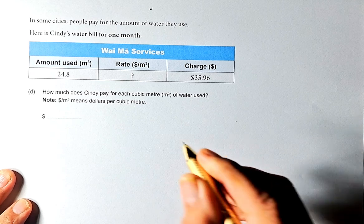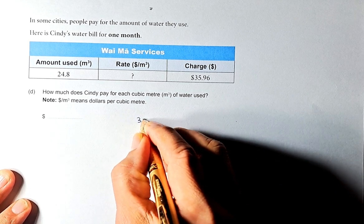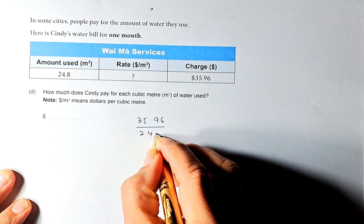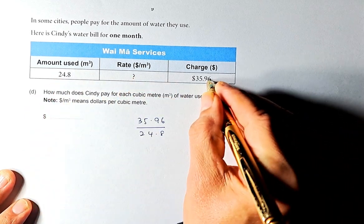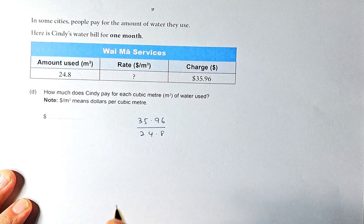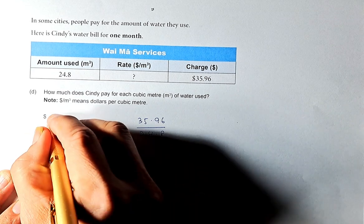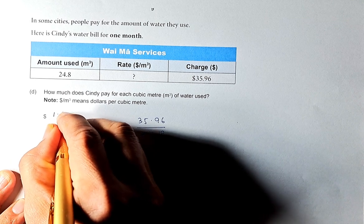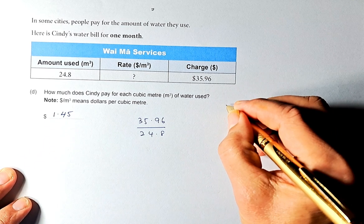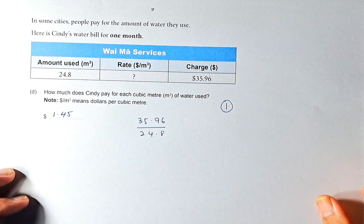To calculate the question mark, we just need to do $35.96 divided by 24.8 because this times that will give you that. So you take $35.96 divided by 24.8 meters cubed. The answer is $1.45 per meter cubed, and that will give you an outcome number 1 in this question.